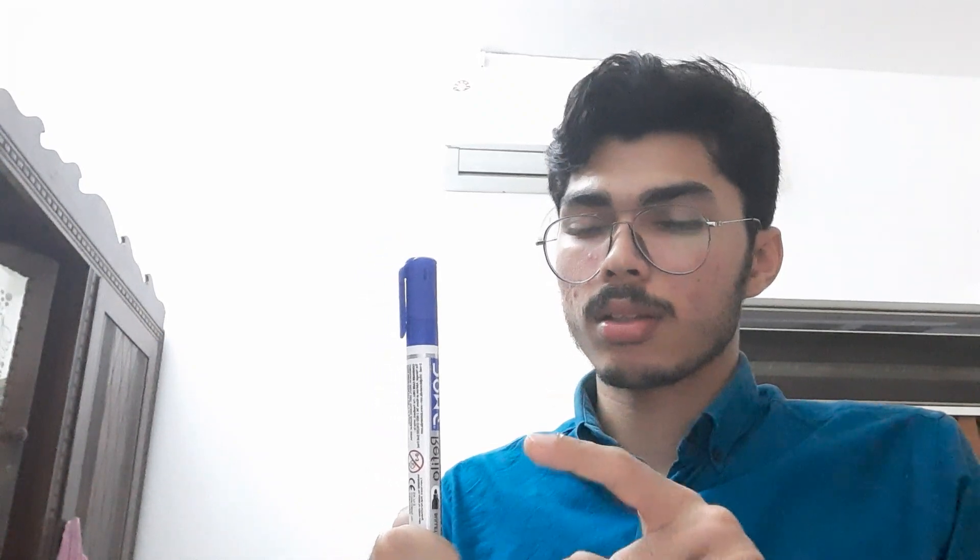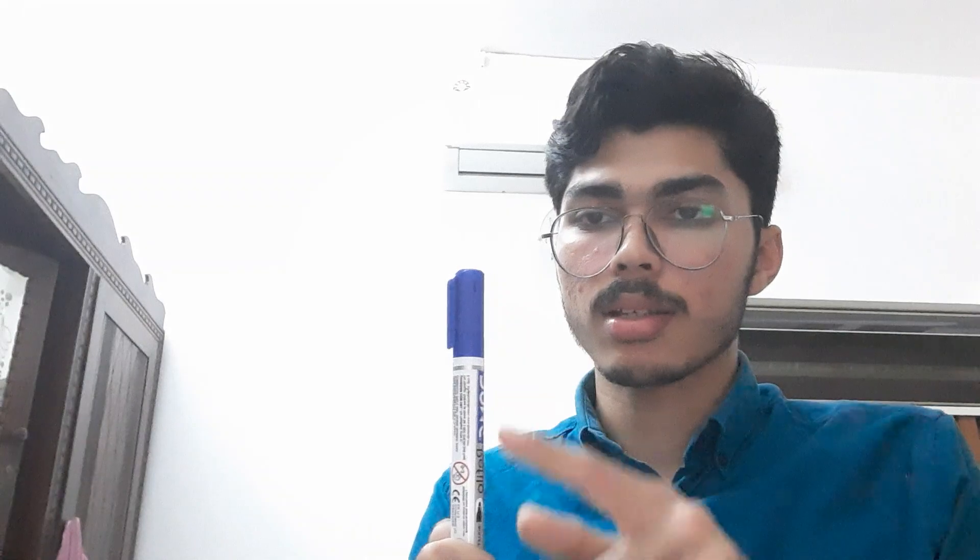Another virulence factor is the presence of fimbriae, or type 4 pili. The type 4 pili in Pseudomonas help in twitching motility, which is independent of flagella. The fimbriae or pili present in Pseudomonas act as virulence factors. As this is a gram-negative bacteria, the lipopolysaccharide or endotoxins present in the bacteria also act as virulence factors.